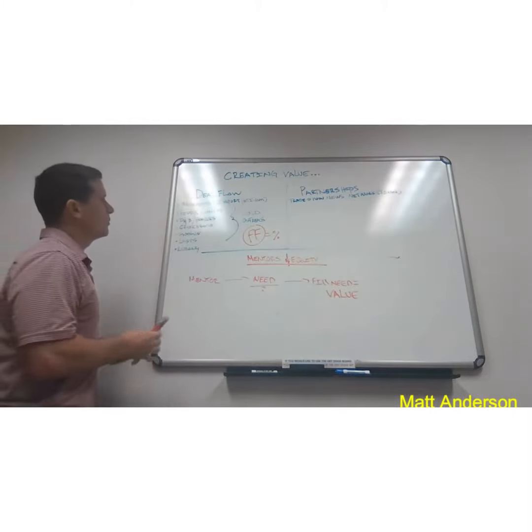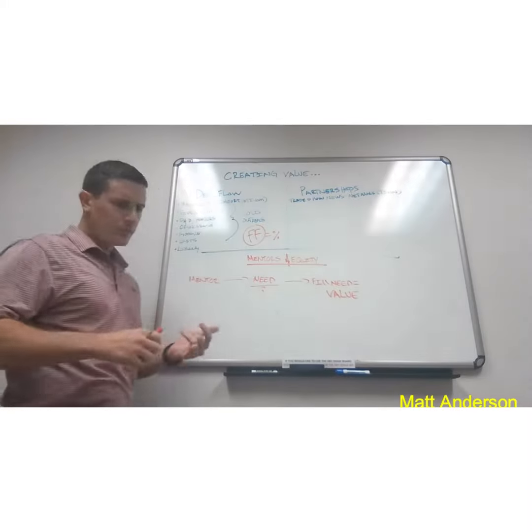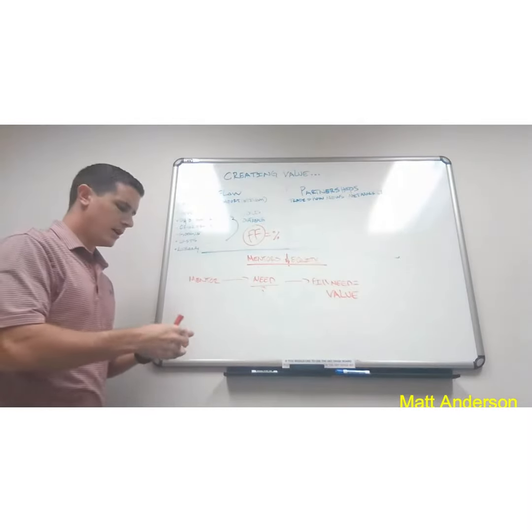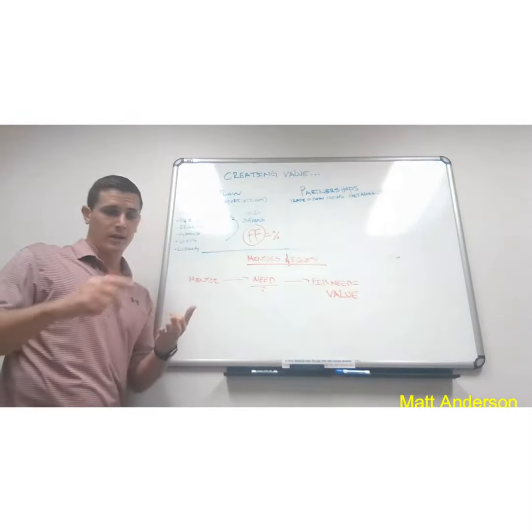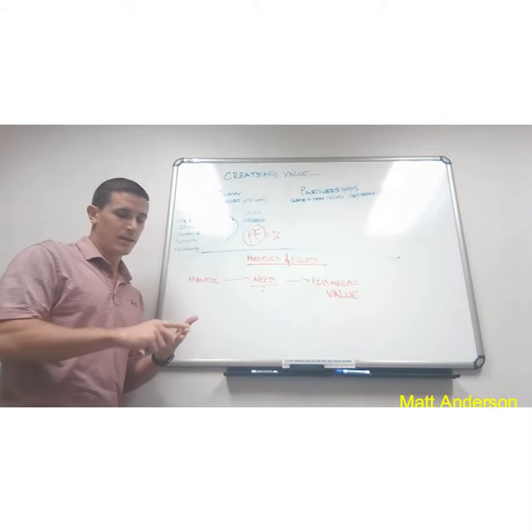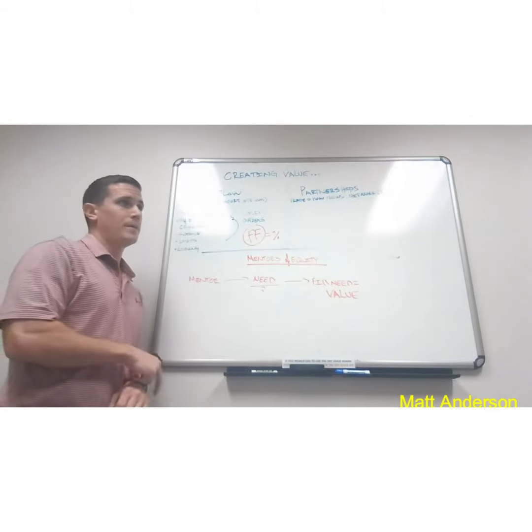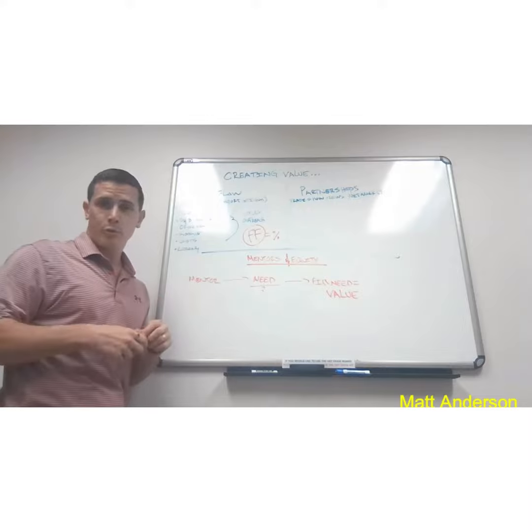But ways to find deal flow would be manifests. So there's ship manifests, there's manifests for freight forwarding, trucking companies, rail, and the ships that come in through the ports.